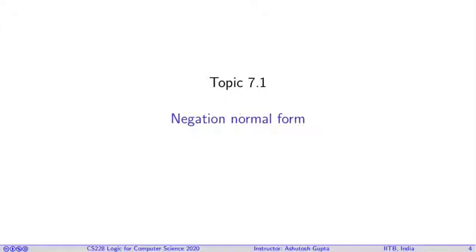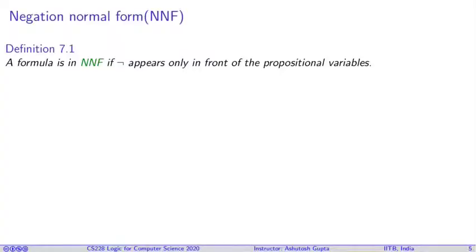Before understanding conjunctive normal form, we need to understand an even simpler kind of normal form, which is called negation normal form (NNF). In negation normal form, the negation symbol only appears in front of the propositional variables and nowhere else is it allowed to appear.